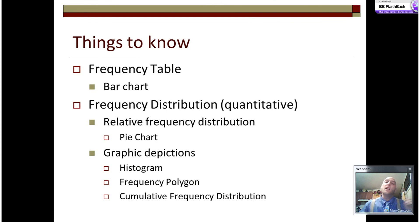The things we covered today: frequency tables and bar charts and how bar charts are used to represent frequency tables. Frequency distributions and how relative frequency distributions and graphs such as pie graphs are used to represent relative frequency distributions. As well as graphic depictions of histograms, frequency polygons, cumulative frequency distributions, and how all of those are used to represent frequency distributions. Hope you learned something today. Stick around if there's anything else you want to know.